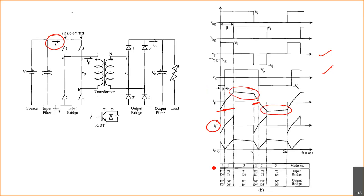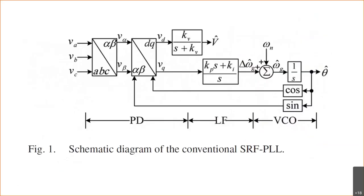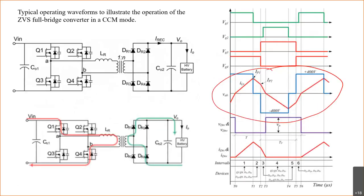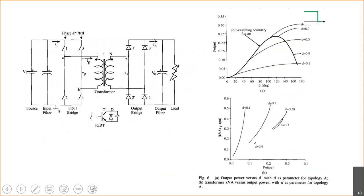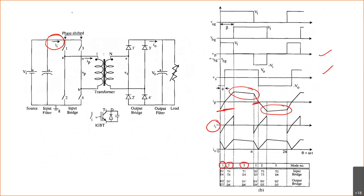Based on that, we have three different regions or modes of operation: Mode 1, Mode 2, and Mode 3. This is for continuous conduction mode. The same waveforms are drawn here for an idealized case.